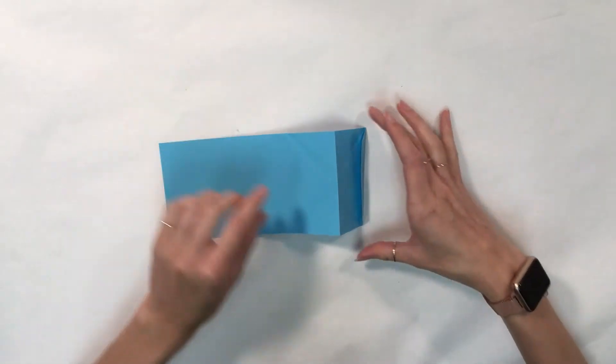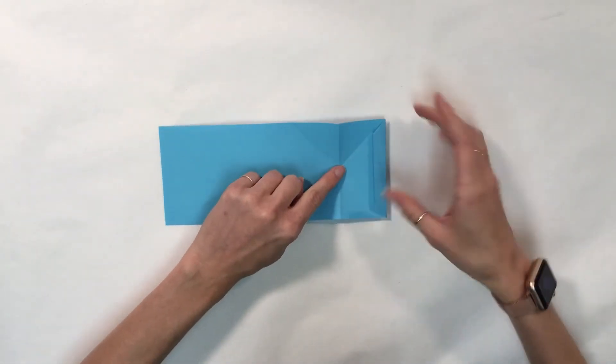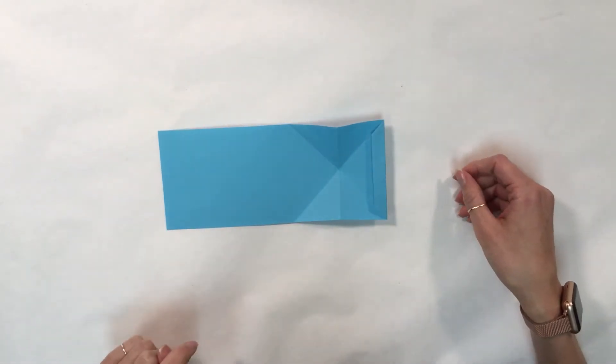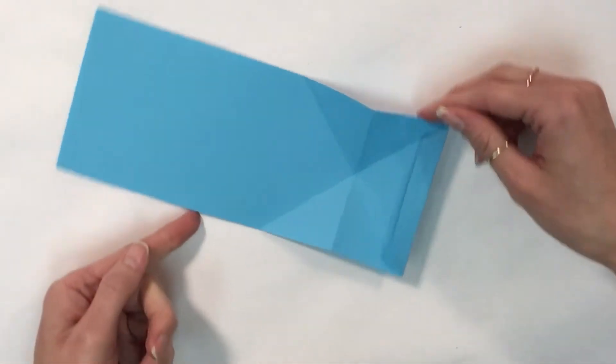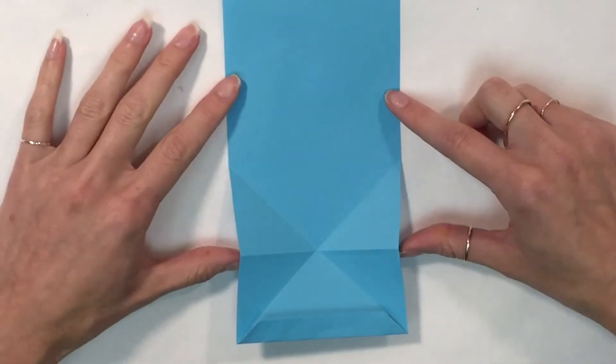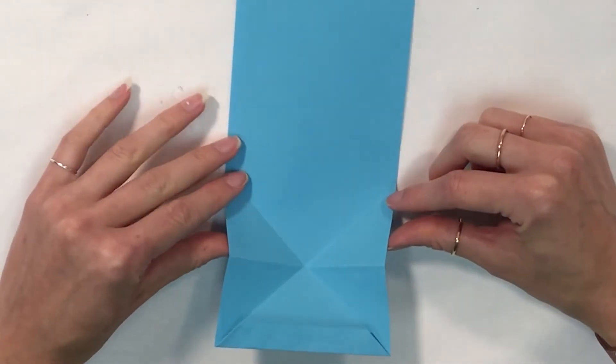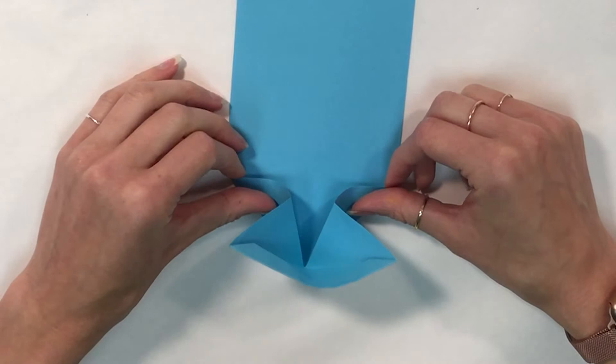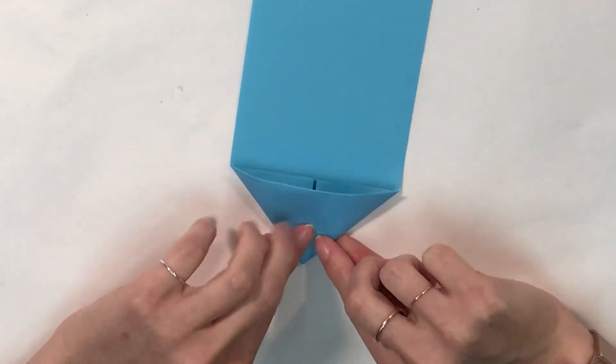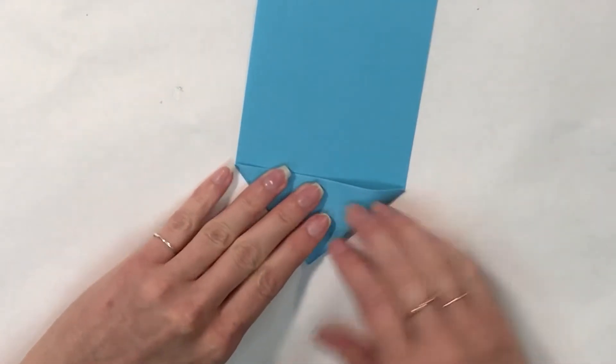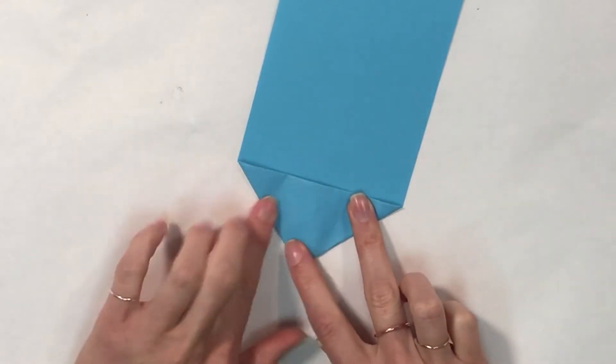I'm going to unfold my paper, press down on the center of my X, and you will notice that I have two mountain folds now. I am going to take those mountain folds, bring them together, and flatten my triangle down.